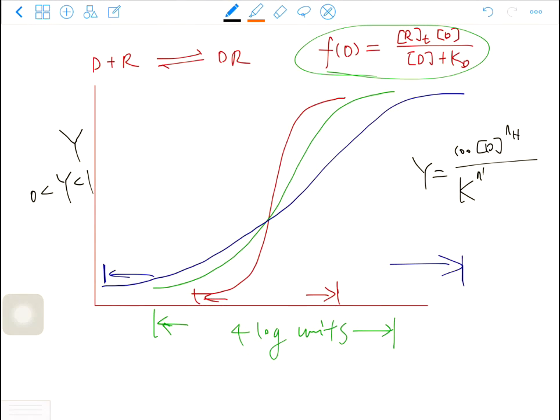which is constant, to the power of Hill coefficient plus d to the power of Hill coefficient. So when Hill coefficient is 1, you have the green curve that spans over 4 log units on the x-axis.